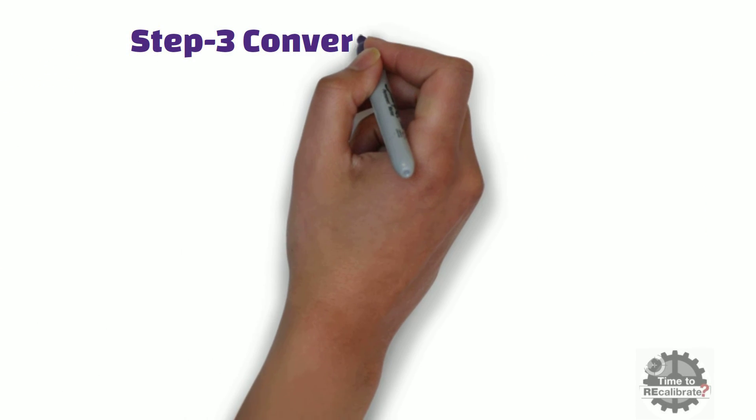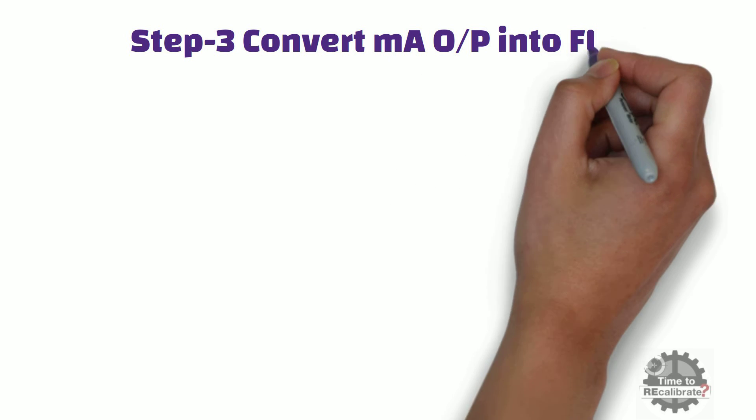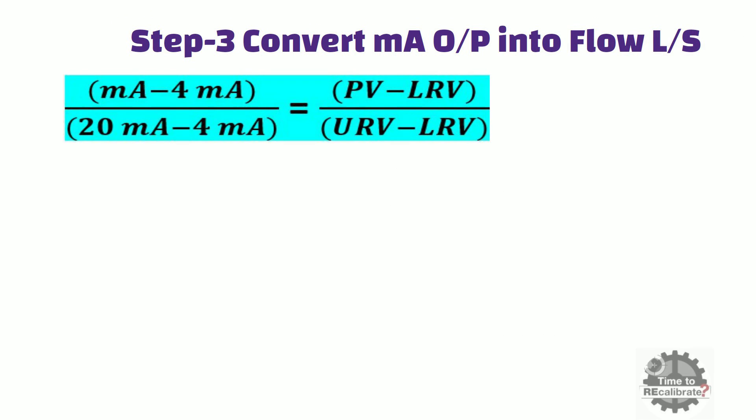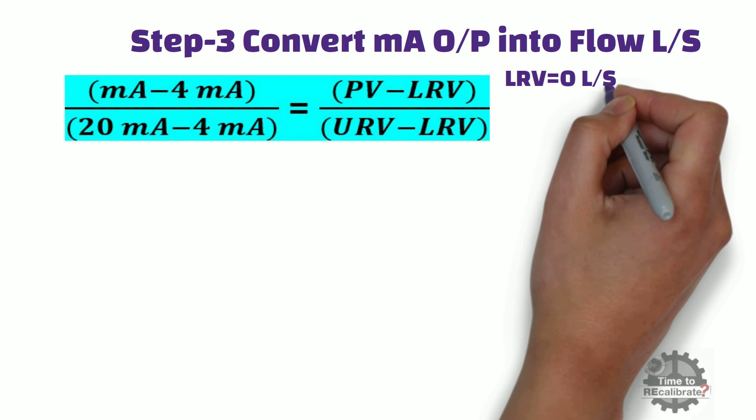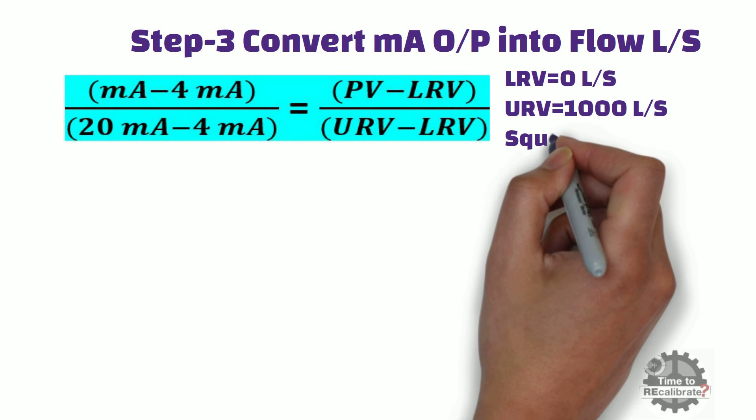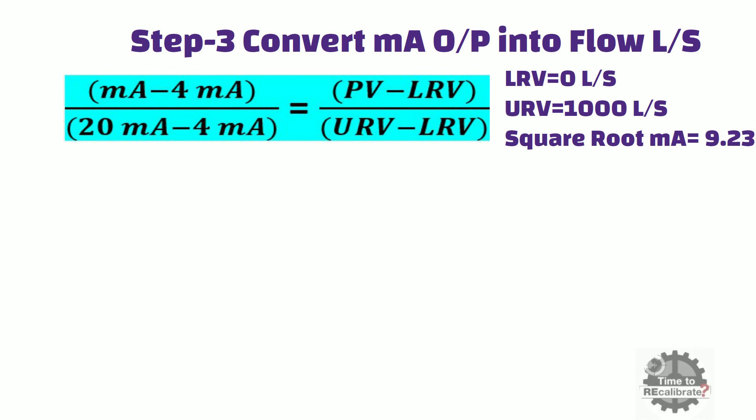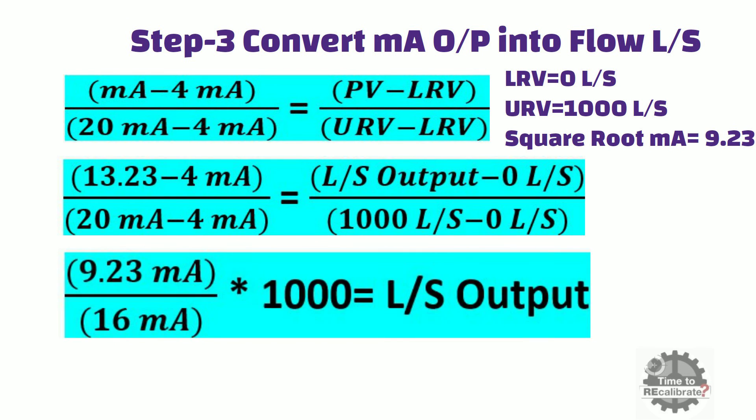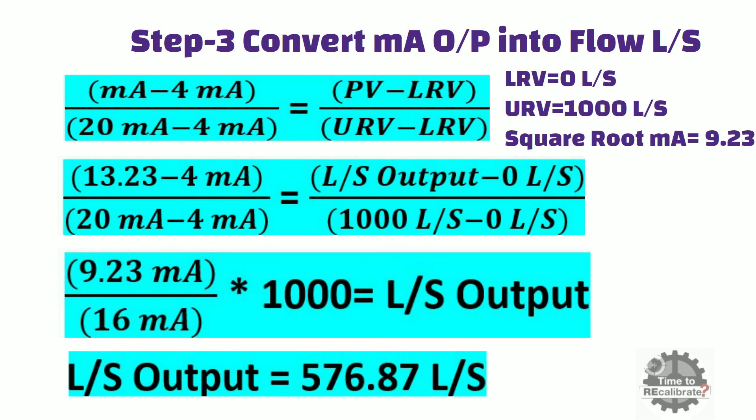In the third and last step, I am going to convert square root milliampere output into corresponding flow. As you can see from the equation, we need to put upper range value, lower range value, and square root milliampere value in the equation. Now do the simple math calculation after putting values into the equation. You will get 576.87 liters per second. This is our flow range when differential pressure is 500 mm H2O.